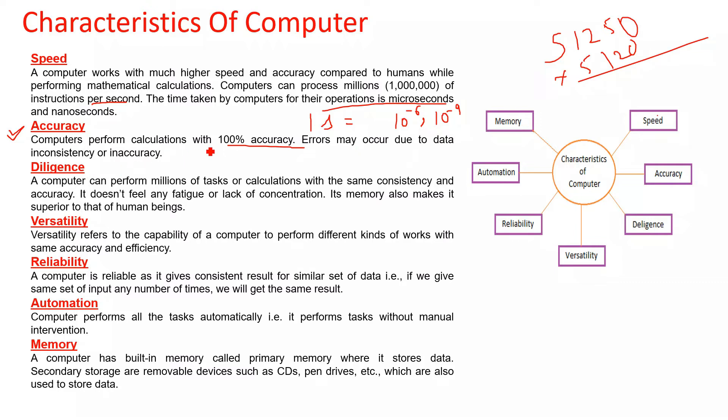Second is accuracy. Computers perform calculations with 100% accuracy. Errors may occur due to data inconsistency and inaccuracy. For example, 10 divided by 2 equals 5, but if I write 10 divided by 0, this is infinity, which is an error because we cannot represent infinity.